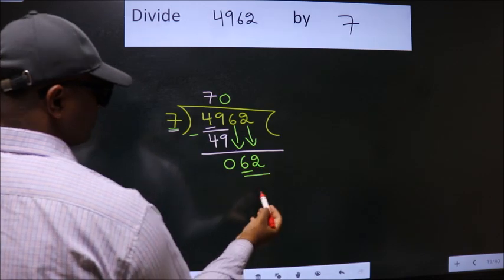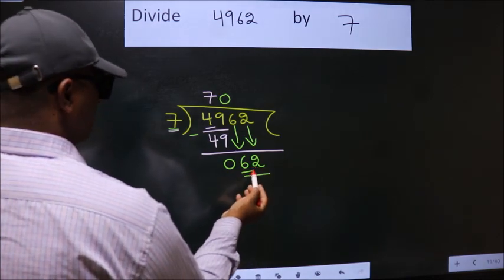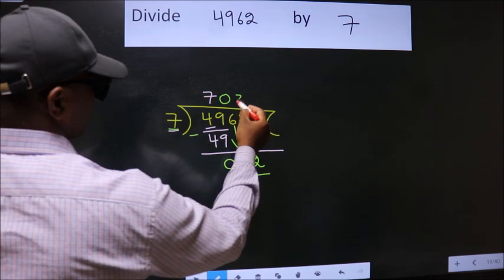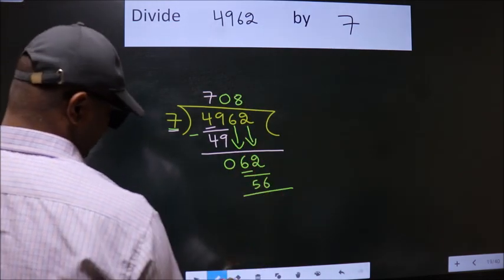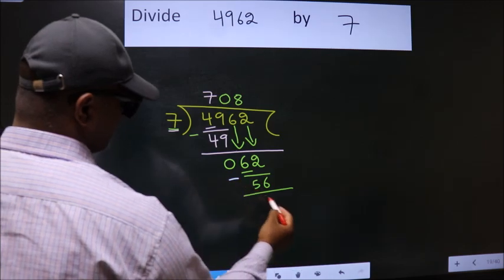So 62. A number close to 62 in 7 table is 7 8s 56. Now we subtract. We get 6.